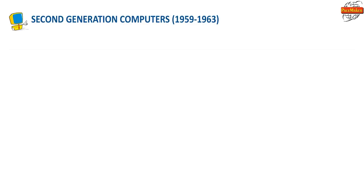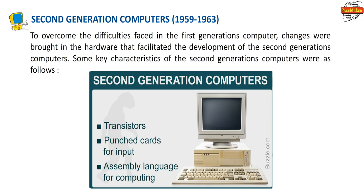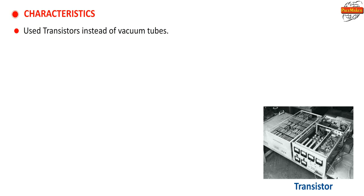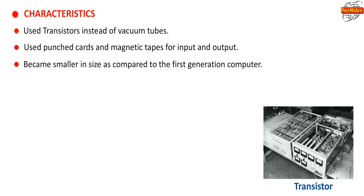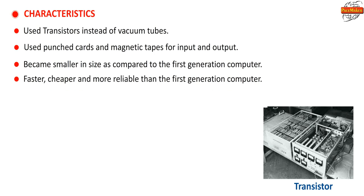Second Generation Computers (1959–1963): To overcome the difficulties faced in the first generation, changes were brought in the hardware that facilitated the development of second generation computers. Key characteristics: they used transistors instead of vacuum tubes, used punched cards and magnetic tapes for input and output, became smaller in size, and were faster, cheaper and more reliable than the first generation. Examples: IBM 1401, LEO, Honeywell 400, etc.